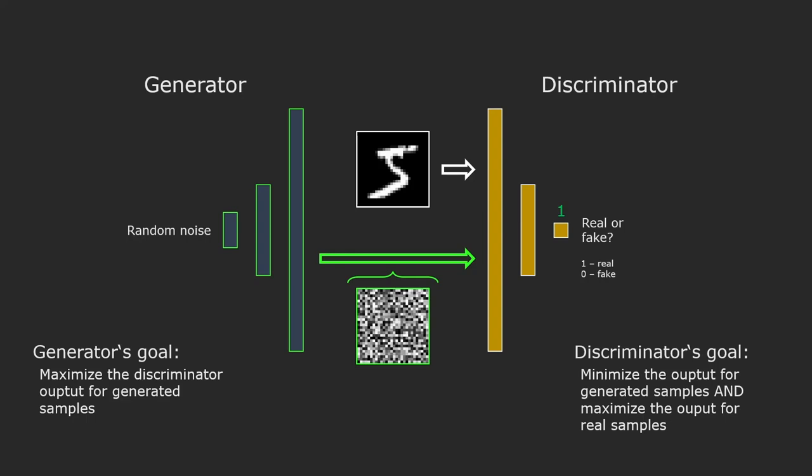Be careful that in this step you freeze the weights of the discriminator and only change the weights of the generator. This is because you want to reduce the loss by improving the generator and not by worsening the discriminator.